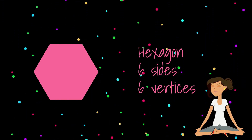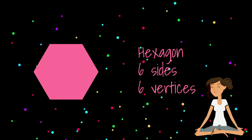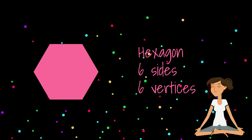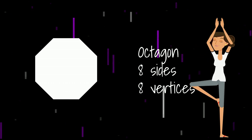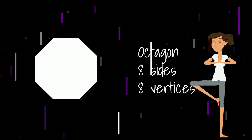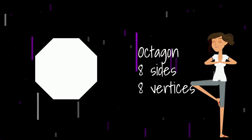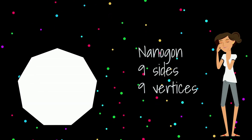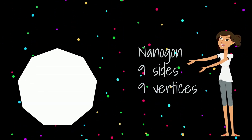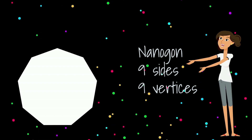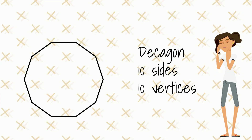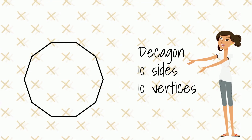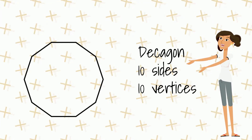Then we have a hexagon, which has six sides and six vertices. The next shape is an octagon — it has eight sides and eight vertices. This is a nonagon — it has nine sides and nine vertices. And this shape is a decagon — it has ten sides and ten vertices.